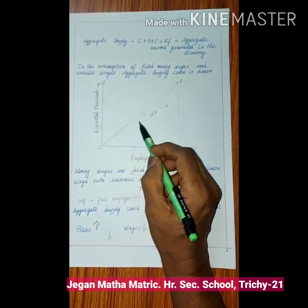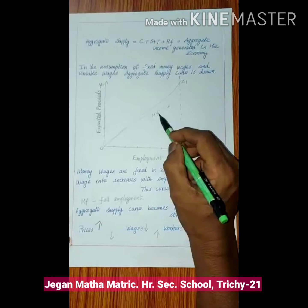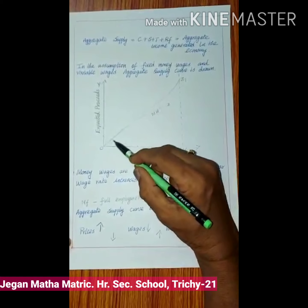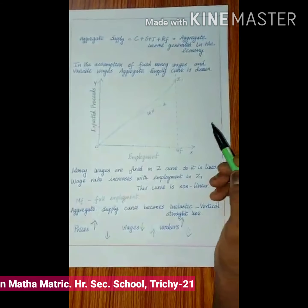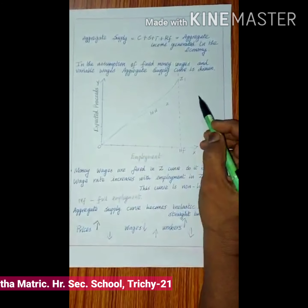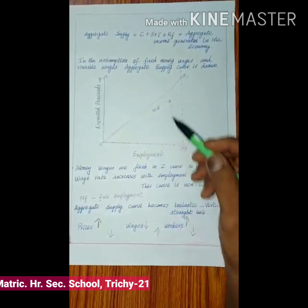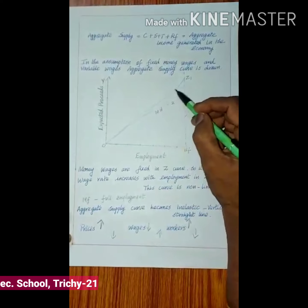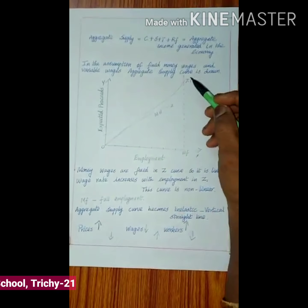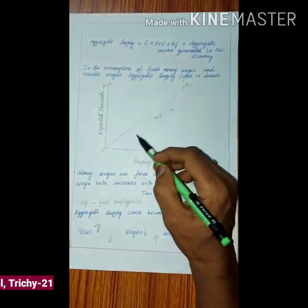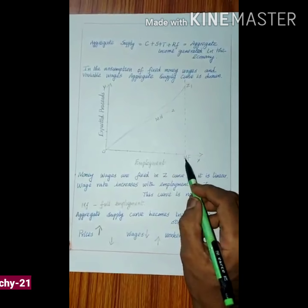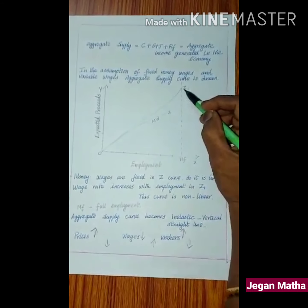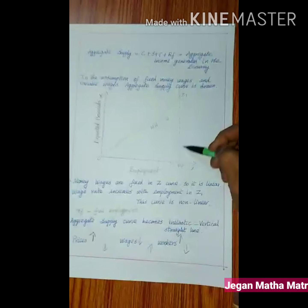Money wages are fixed in the Z curve, so it is linear. Wages rate increases with employment in Z1, thus this curve is non-linear. At full employment, aggregate supply curve becomes inelastic, in the vertical straight line.